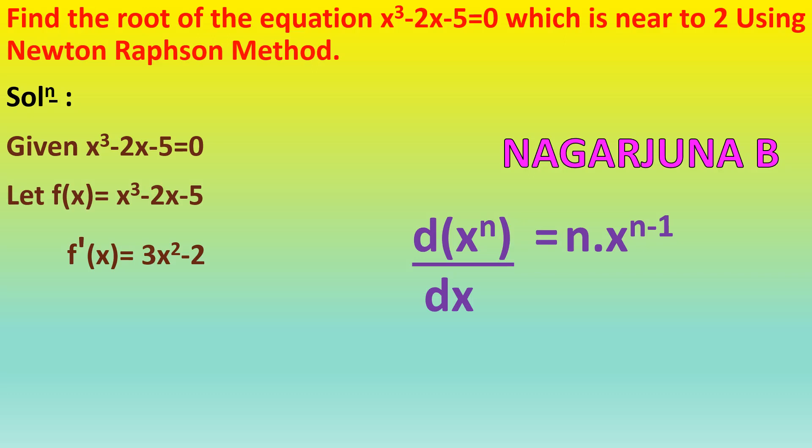For the −2x term: that is x to the power 1, so 1·x^(1−1) = 1·x⁰ = 1, and 2×1 = 2. Therefore f′(x) = 3x² − 2. They have given that the root is near to 2, meaning the initial guess is x₀ = 2.